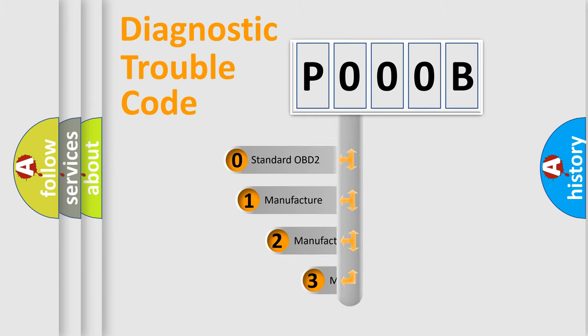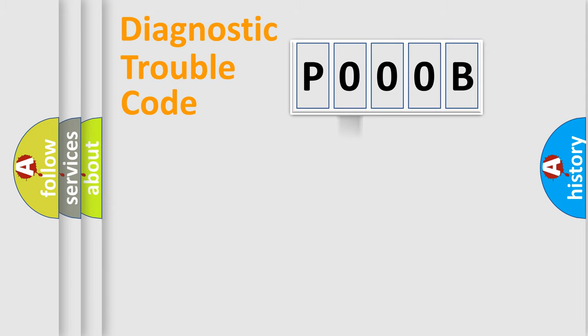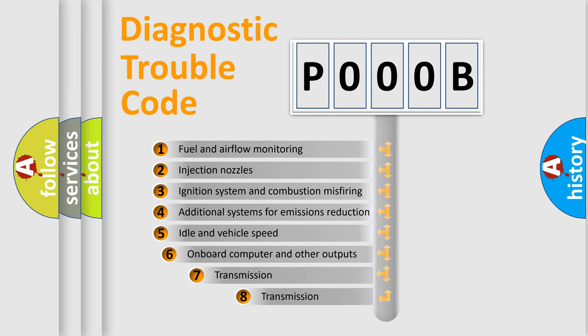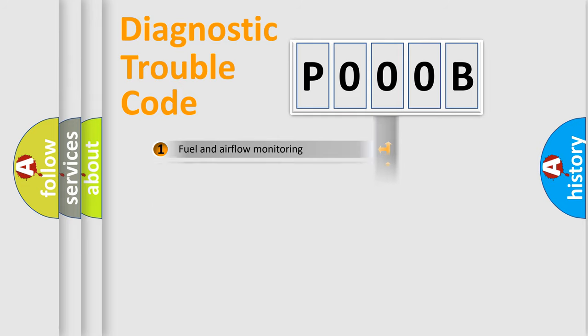If the second character is expressed as zero, it is a standardized error. In the case of numbers 1, 2, or 3, it is a manufacturer-specific expression of the car specific error. The third character specifies a subset of errors. The distribution shown is valid only for the standardized DTC code.